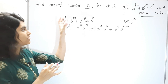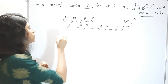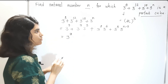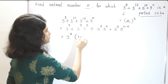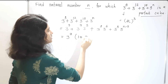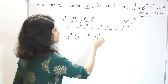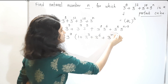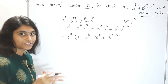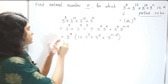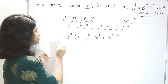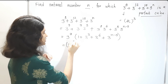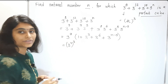So, taking 3^9 common, we get 3^9 times (1 + 3^3 + 3^6 + 3^(n−9)). Now, 3^9 can be written as (3^3)^3, which is a perfect cube.